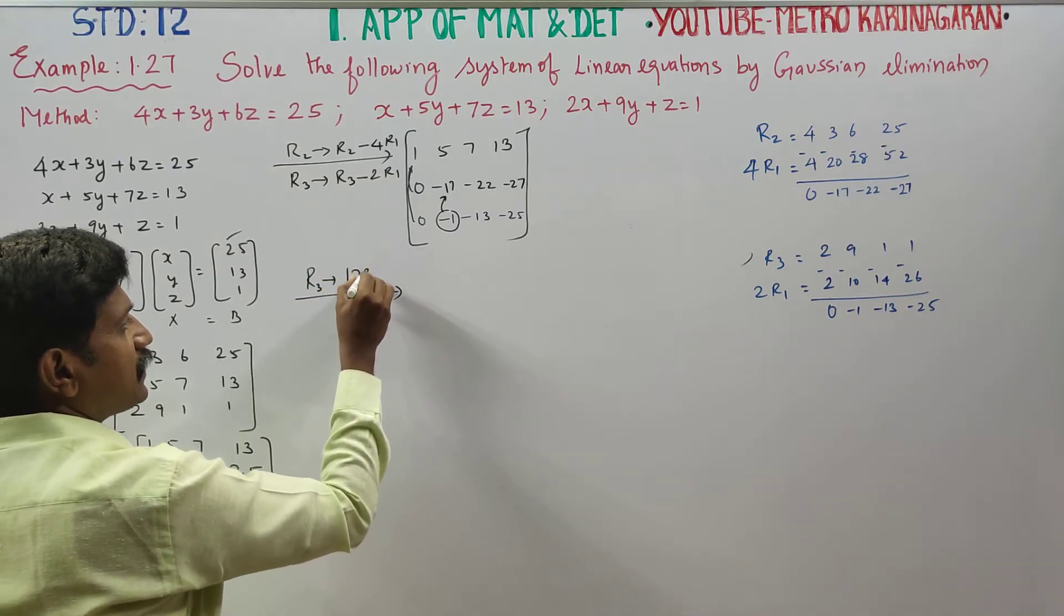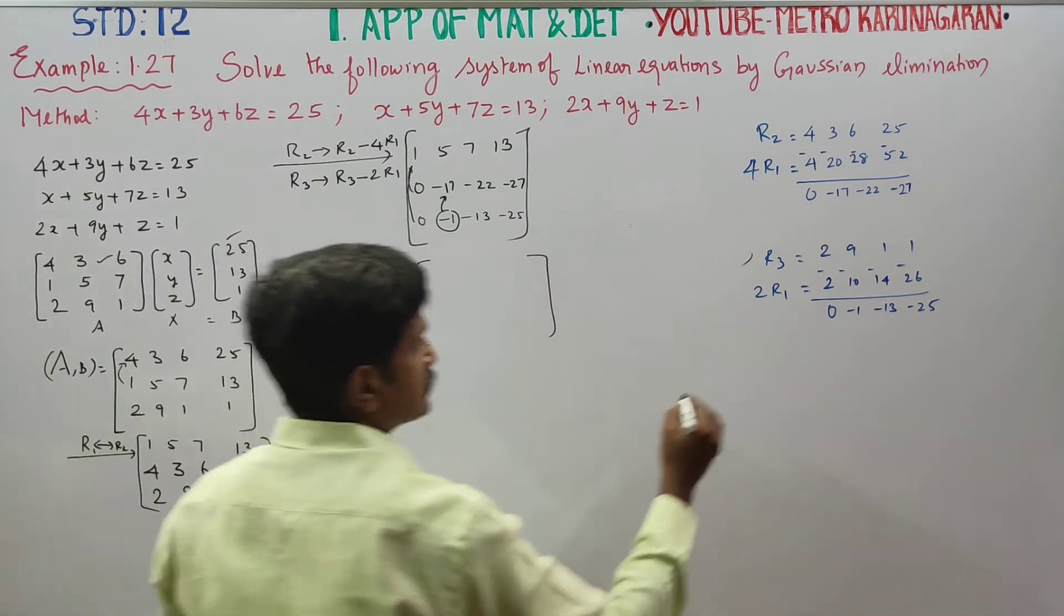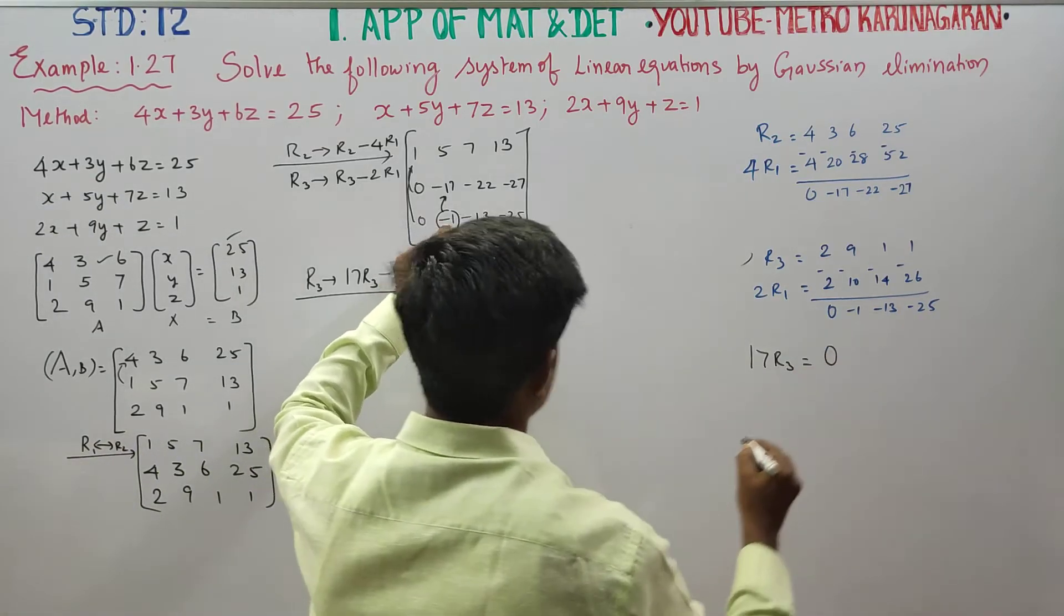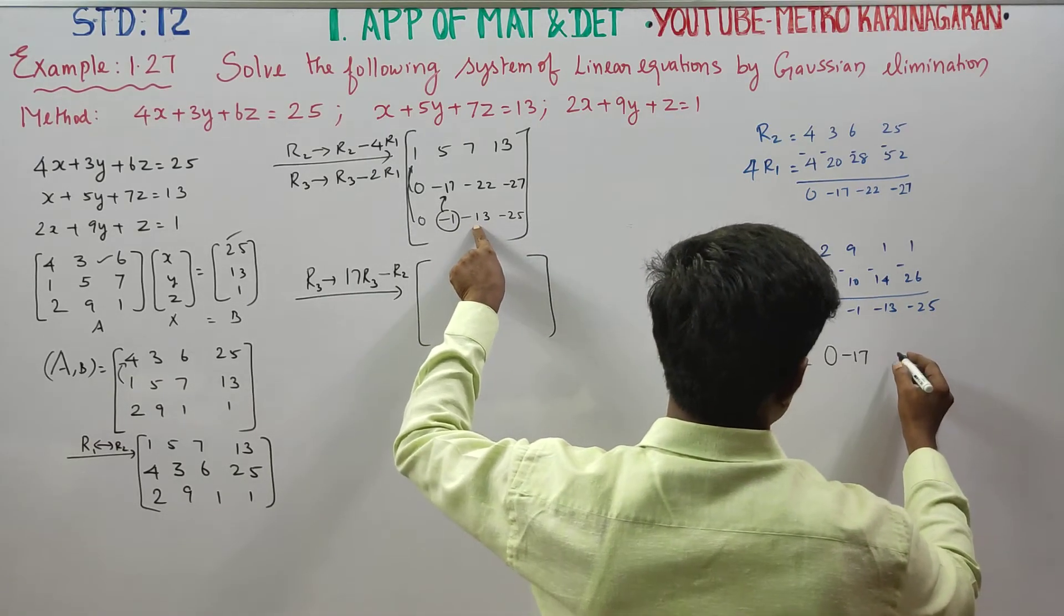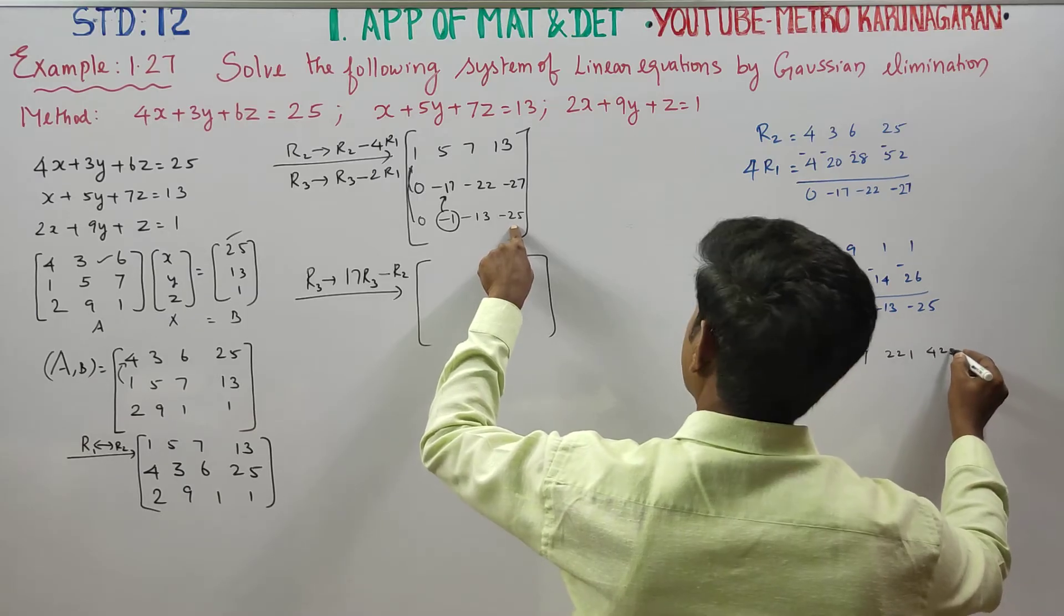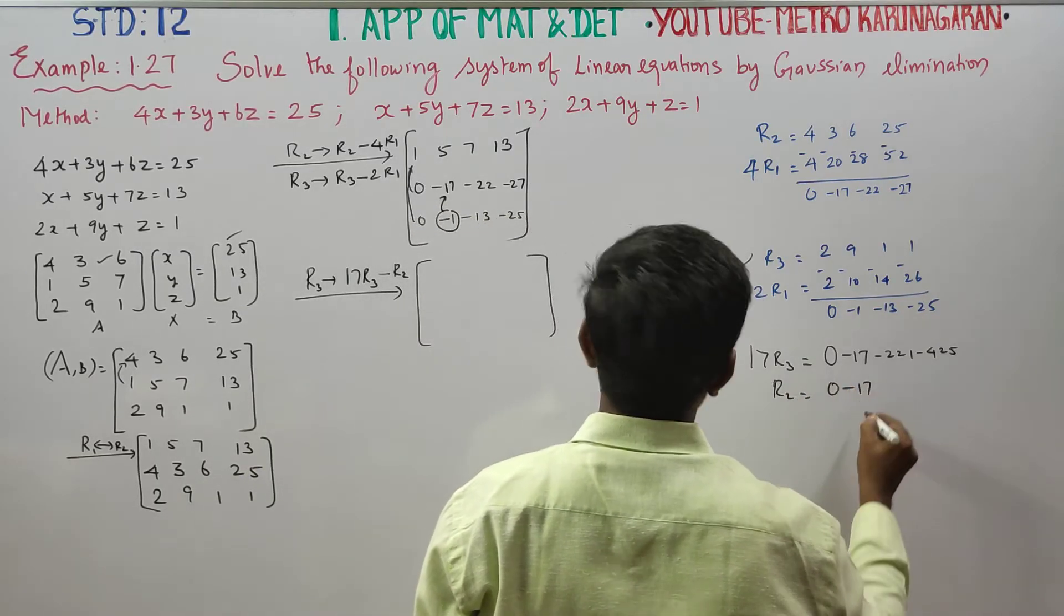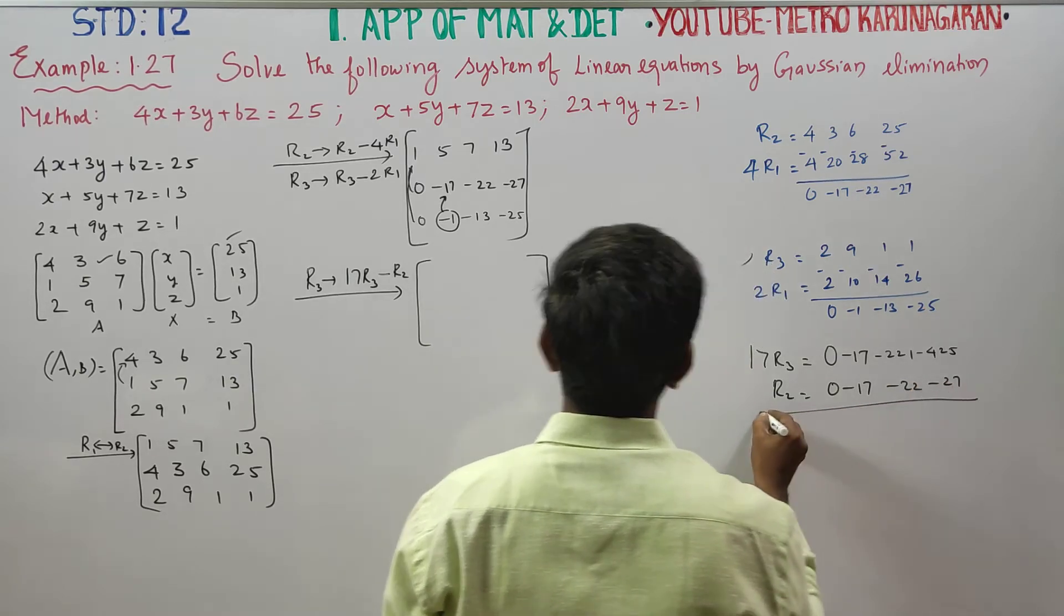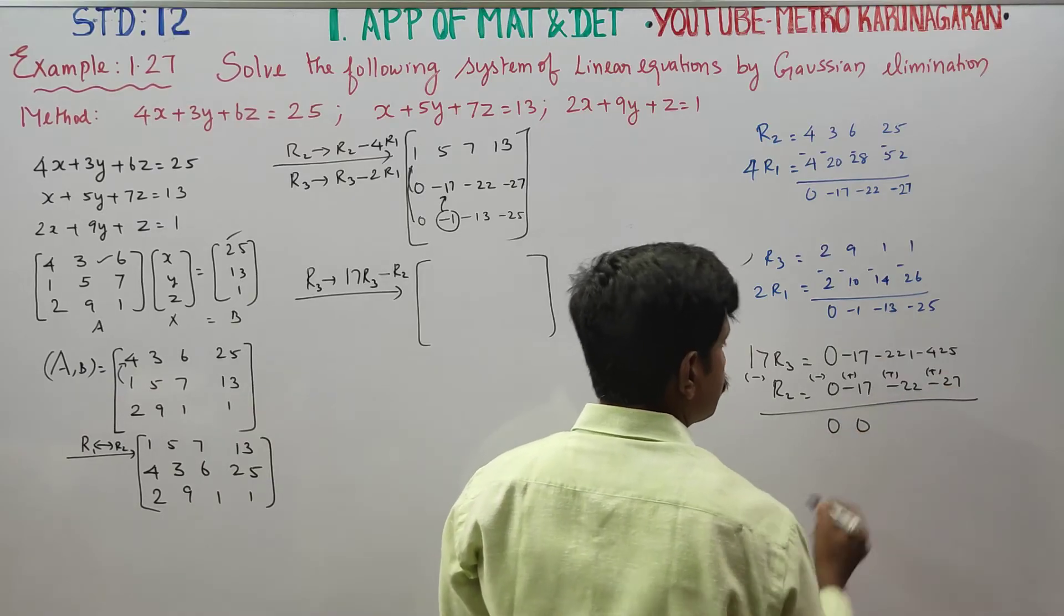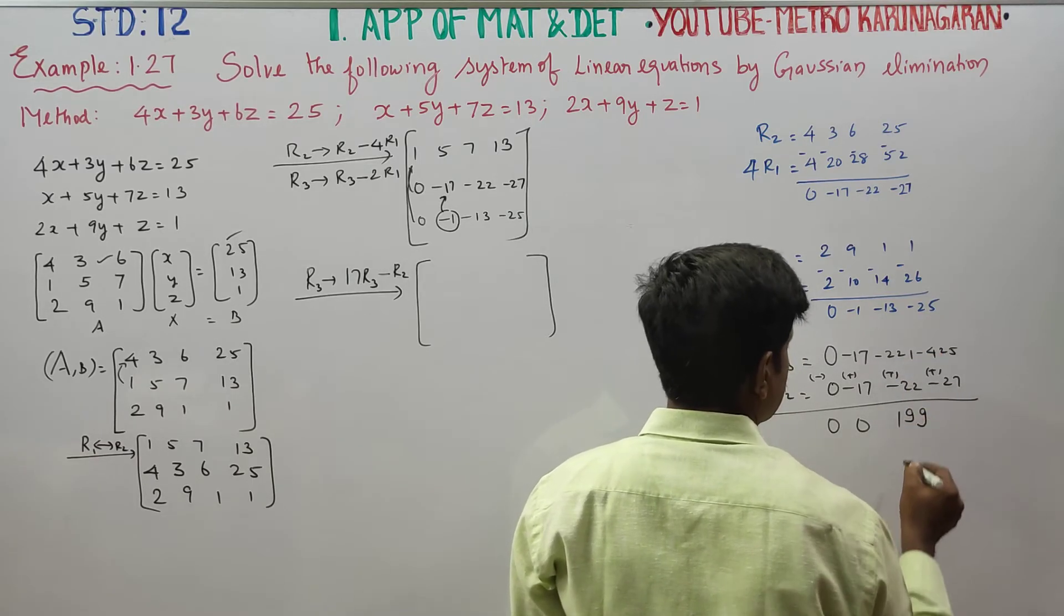R3 is equal to 17 times R3 minus R2. Next, 17 times R3. Now 0 into 17 is 0. Minus 1 into 17 is 17. Then 17 into 13 is 221, and you will be getting 425.